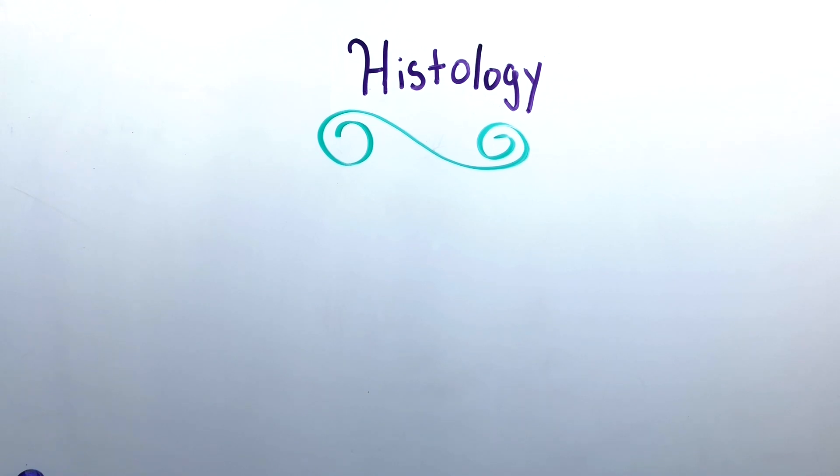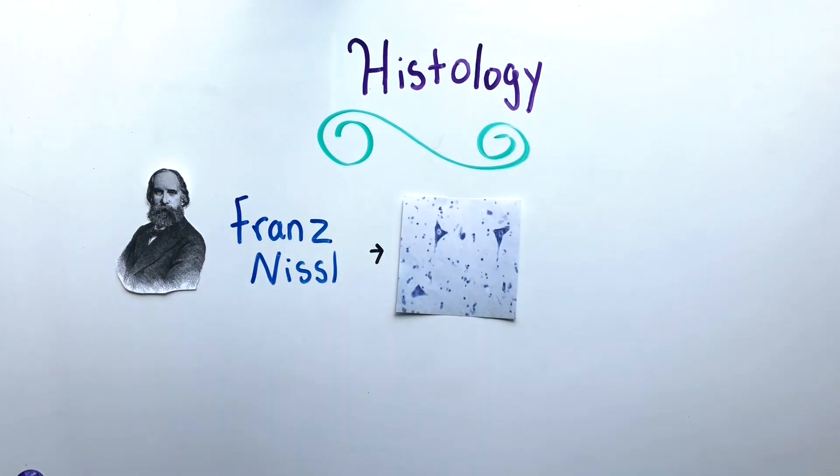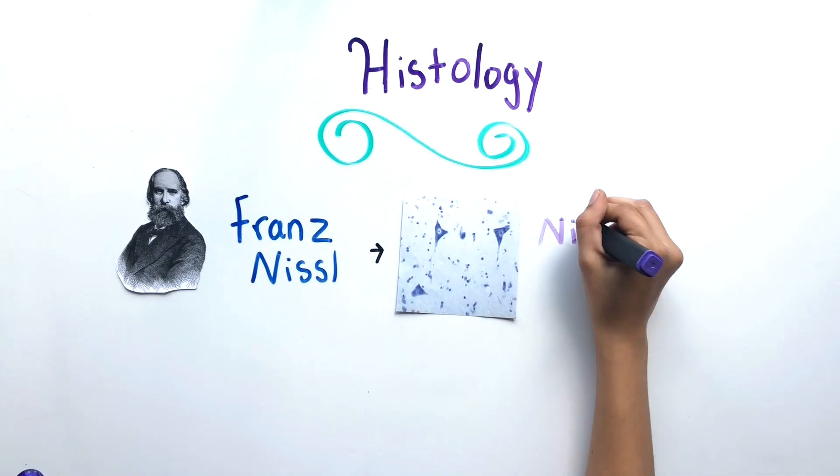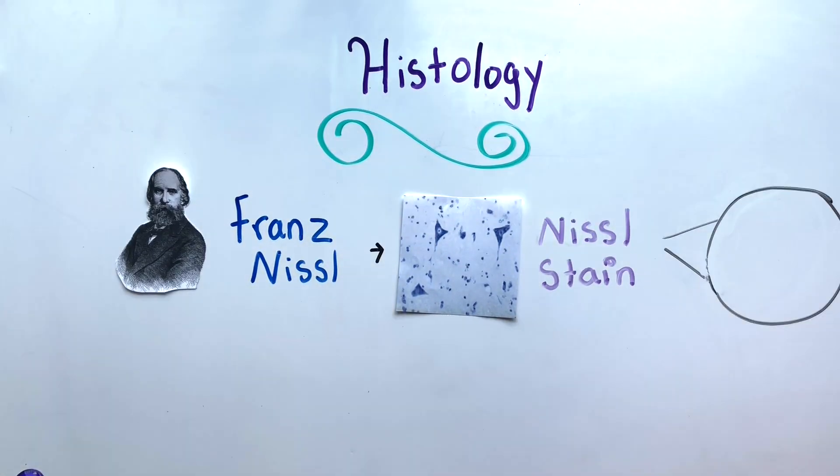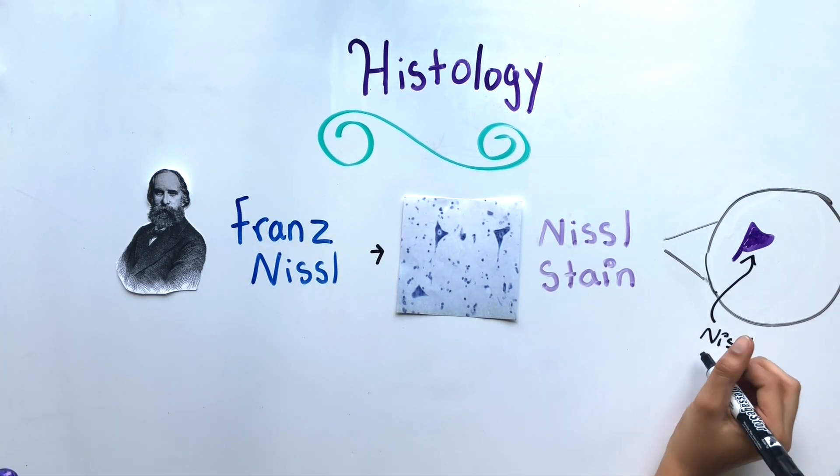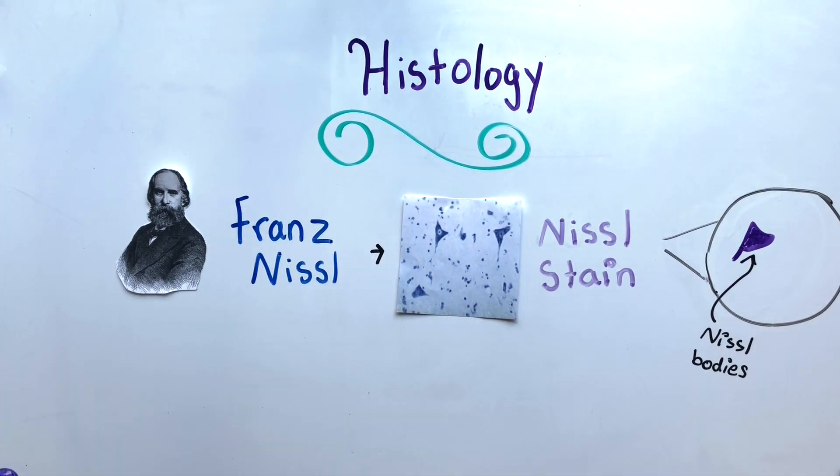However, histologists could not properly distinguish between individual cells. German neurologist Franz Nissel found a way to selectively stain a cell's nucleus and the surrounding area using cresyl violet. These clumps are called Nissel bodies and the stain is called a Nissel stain.